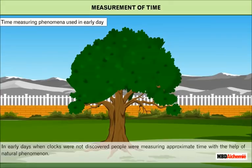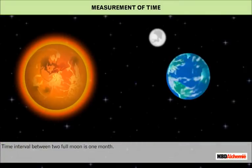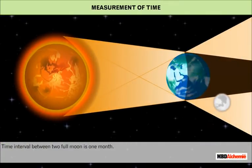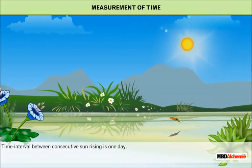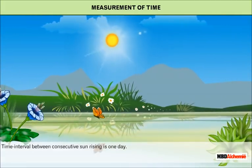In early days, when clocks were not yet discovered, people measured approximate time with the help of natural phenomena. For example, the time duration between two flowering seasons for a tree is approximately one year, the time interval between two full moons is one month, and the time interval between consecutive sunrises is one day.